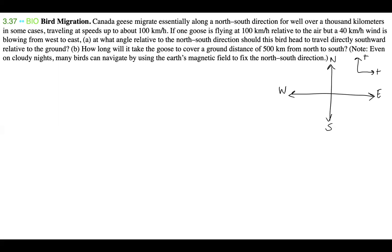Instead of just going directly and drawing our bird's-eye view diagram, there's a lot of information thrown at us in this problem. So we want to first write down our knowns so that we can be better informed on how to draw our diagram, because this problem is a little confusing due to the wording. We know that this one goose is flying at 100 kilometers per hour relative to the air, and on top of that there is a 40 kilometer per hour wind blowing from west to east. We're looking for the angle, and ultimately we want the bird to travel directly southward relative to the ground.